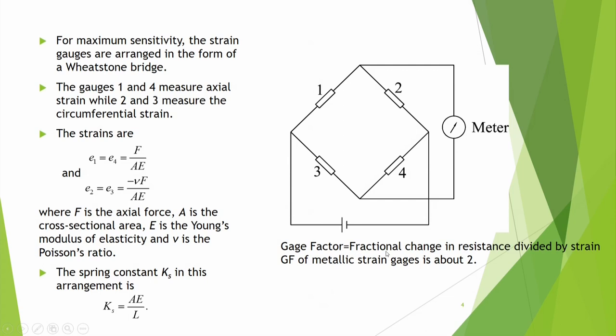The gauge factor is defined as the fractional change in resistance divided by strain — that is, (ΔR/R) divided by strain. This value should be high for good sensitivity. Suppose the force doubles but there is only a 1% change in resistance — then measurement becomes difficult. Gauge factor for metallic strain gauges is about 2, meaning a unit change in strain produces a fractional change of 2 times that strain.